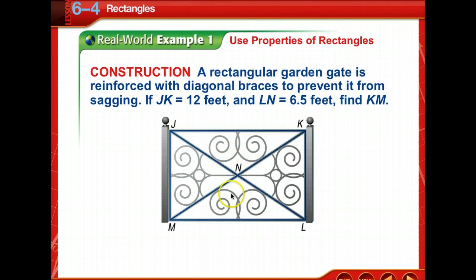Let's look at an example. We have a rectangular garden gate reinforced with diagonal braces—if you don't do that, it sags after a while. We're told that JK equals 12 feet and LN equals 6.5 feet, and we're asked to find KM. You might want to pause for a moment and note the information.